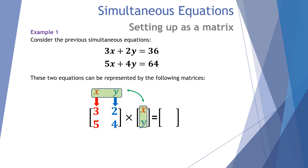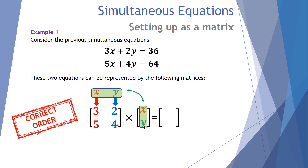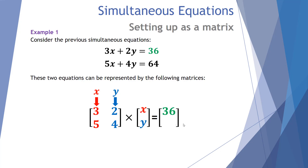We then put the variables x and y alongside. If we were to rotate those across to the top, we'd see that x lines up with the 3's and 5's, and the y's line up with the 2's and 4's — which is exactly what our equations state. Finally, in our last 2-by-1 matrix we put in the totals: 36 and 64. That's the correct presentation of this pair of simultaneous equations.